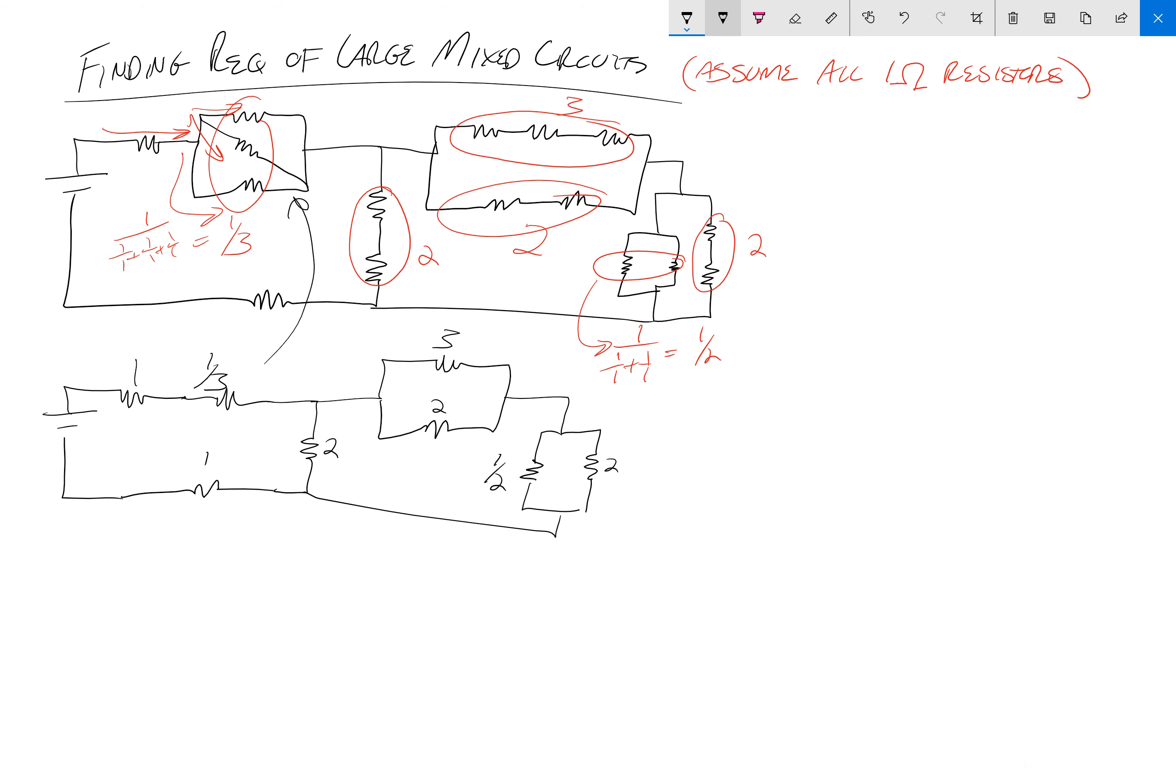So again, we do the same thing: look for things that are obviously series or obviously parallel. If you're having trouble visualizing this, visualize the flow of current around the circuit. Where does it have to go through two or more resistors without branching at a junction, and at what points does it have to split multiple ways at a junction? That would be parallel. So again, give yourself a second, maybe pause the video, try and find some things that you think are series or parallel.